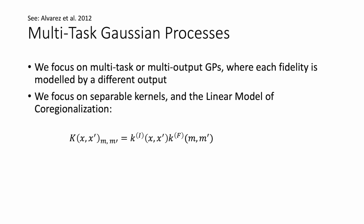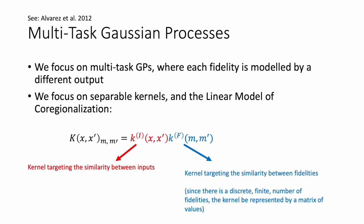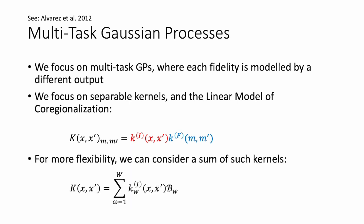Multi-task or multi-output Gaussian processes are Gaussian processes where the outputs are higher dimensional, and each fidelity is modeled by a different output. We focus on separable kernels and the linear model of coregionalization. They are called separable kernels because the kernel is a product of two separate kernels — in red, the kernel targeting similarity between inputs or experiment designs, and in blue, the kernel targeting similarity between fidelities. Since there is a discrete finite number of fidelities, the fidelity kernel can be represented by a matrix of values. In the lower equation, we see a sum of such kernels where we can choose our input kernels freely, with matrices representing the task or fidelity dependencies.